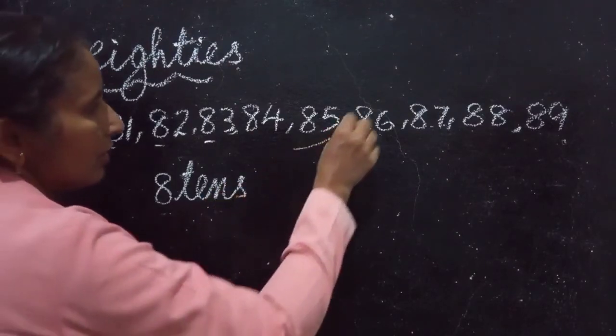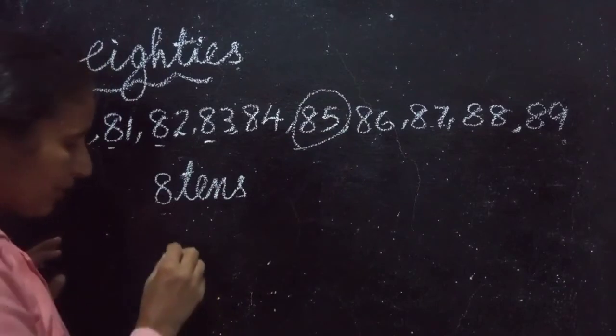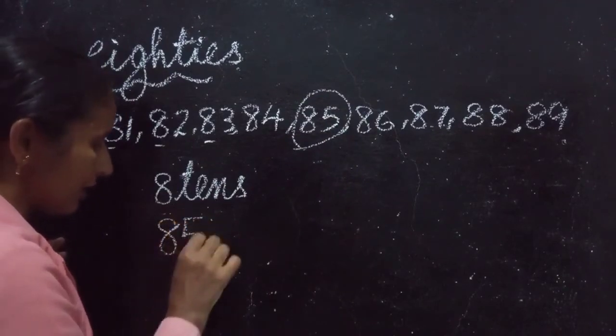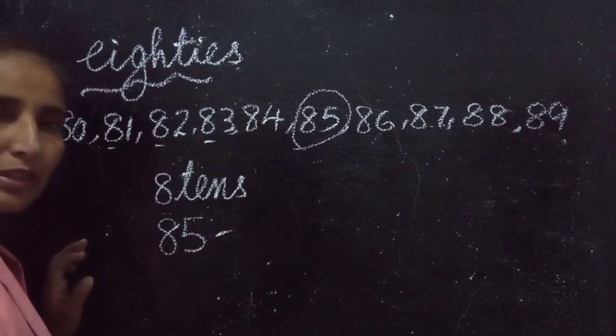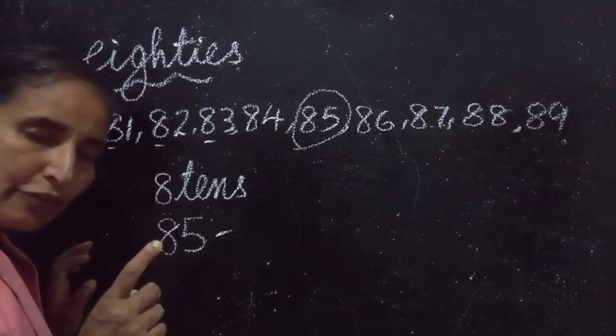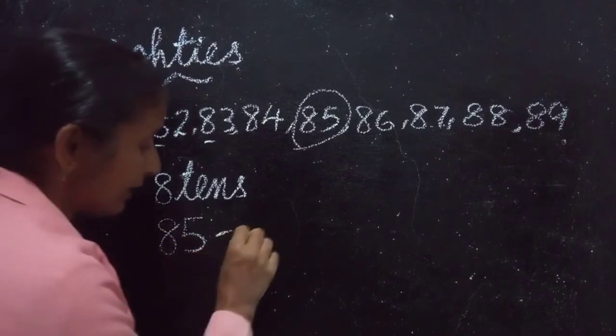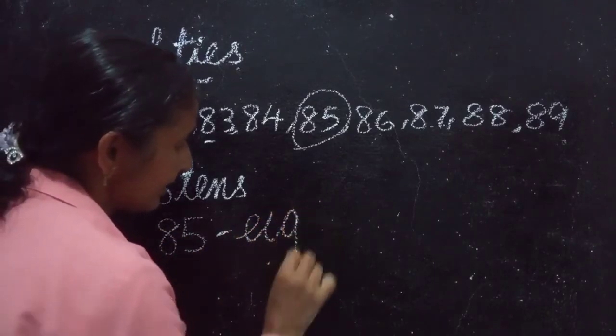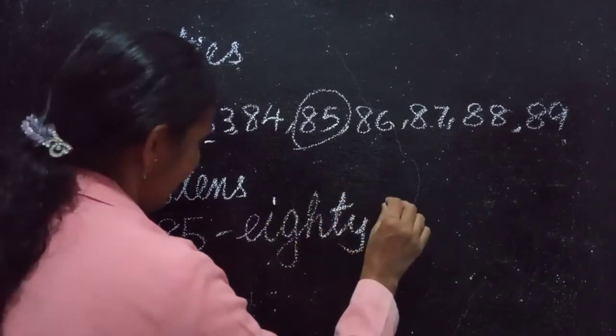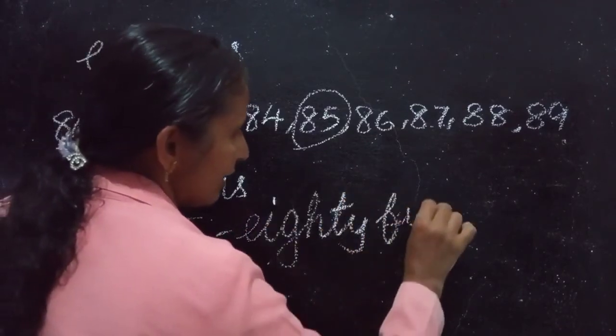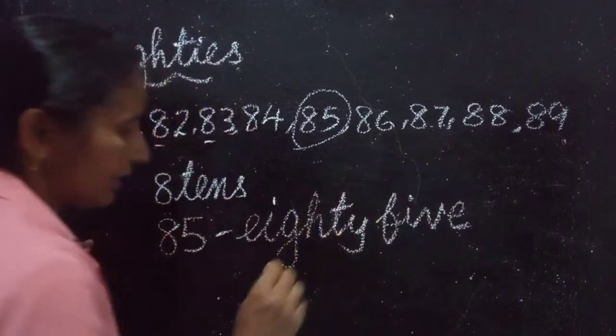Number name of a number. For example, which is this number? 85. So what is the number name of that number? Can you say the number name of 85? Very good. E-I-G-H-T-Y 85. F-I-V-E 5. 85.